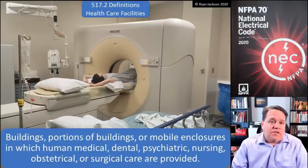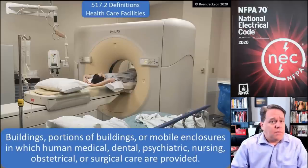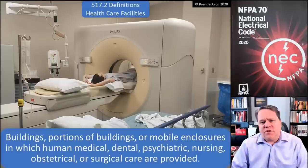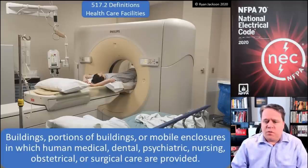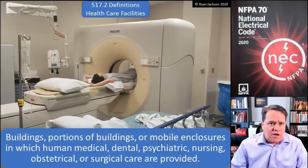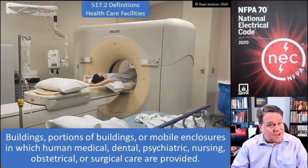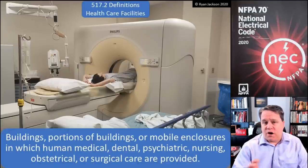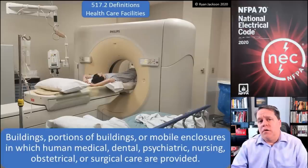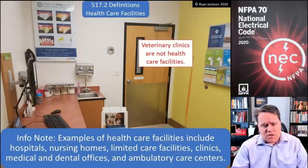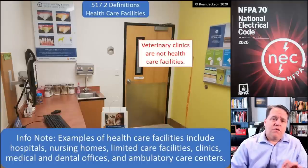517.2 tells us that a health care facility is a building or a portion of a building, or even a mobile enclosure, in which human medical, dental, psychiatric, nursing, obstetrical, or surgical care are provided. So a health care facility is pretty much what you think it would be — somewhere there are doctors and nurses, dental, psychiatric care. Some types of care covered might not jump into your mind immediately, like psychiatric care. They also mention in the scope and definition that this is only for humans.